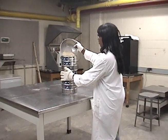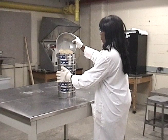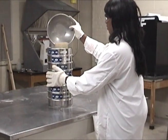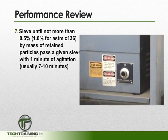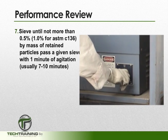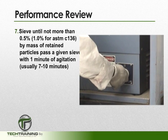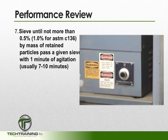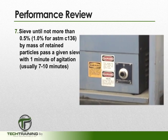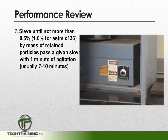For mixtures of coarse and fine aggregate, split the portion of the sample which is finer than the 4.75mm or No. 4 sieve, as necessary. We now want to sieve the sample until not more than 0.5% by mass of retained particles pass a given sieve with one minute of agitation.